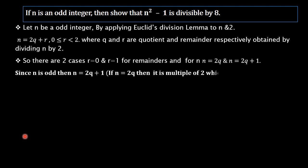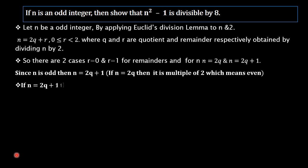Since n is odd, we choose n = 2q + 1. We choose this because if n = 2q, then it is a multiple of 2, which means it is even. So for an odd integer n, we take n = 2q + 1, and we have to prove that n²-1 is divisible by 8.